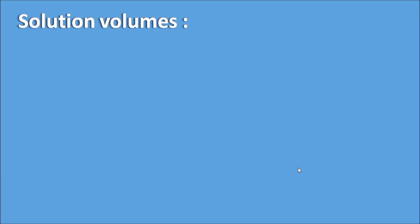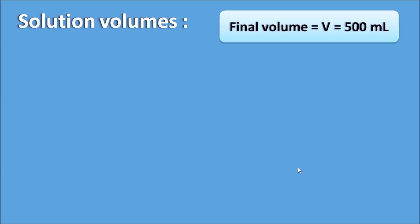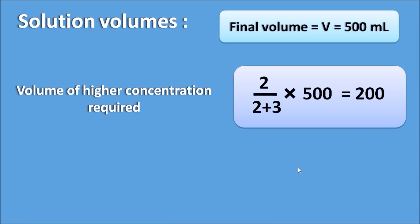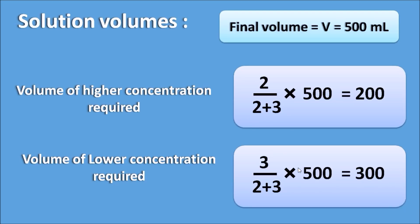Now we calculate the solution volumes for this question. The final volume V is 500 ml. The volume of the higher concentration required is 2 divided by (2 plus 3) multiplied by 500, which equals 200 ml. Similarly, the volume of the lower concentration required is 3 divided by (2 plus 3) multiplied by 500, which equals 300 ml. So 200 ml of the higher concentration should be mixed with 300 ml of the lower concentration to get a final volume of 500 ml.